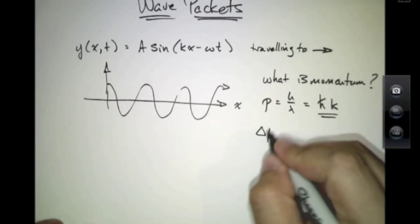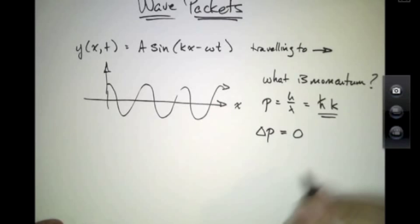Notice then, that delta p, the uncertainty on momentum, is exactly zero.